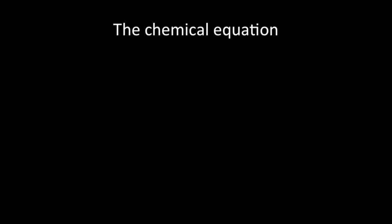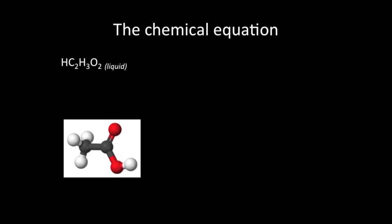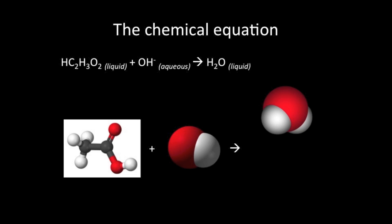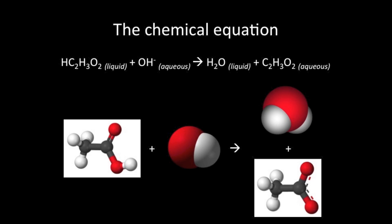Now, let's describe what's happening behind the scenes, so to speak, during the reaction. For this, we will be using the net ionic equation. This reaction begins with a solution of dissociated acetic acid. Hydroxide ions are then added to the solution of acid to form liquid water and the acetate ion.